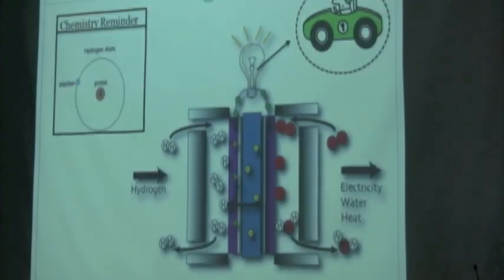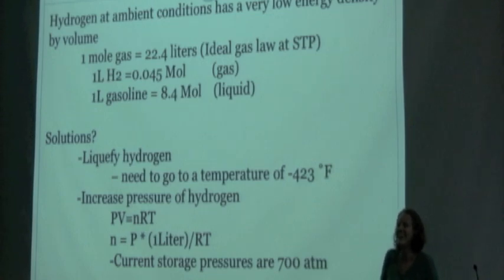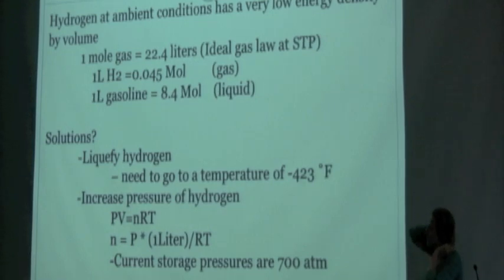So the problem with this system, and using hydrogen as a fuel, is that hydrogen is a little bit difficult to store. So some of you guys in your chemistry class may have been looking at the ideal gas law, where you have seen that one mole of gas equals 22 liters of volume. So hydrogen at room temperature and at room pressure, so one atmosphere, the gas takes up 24 liters.